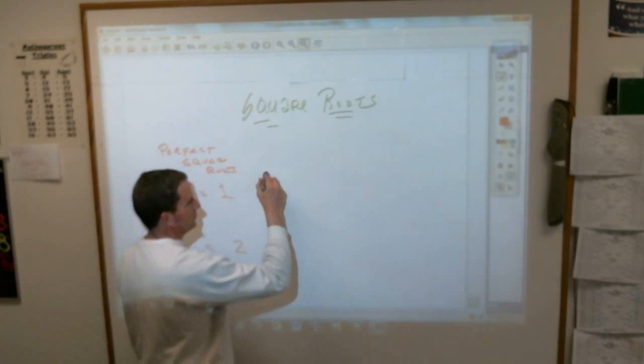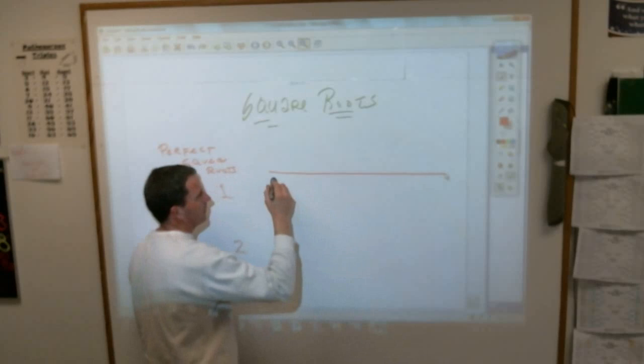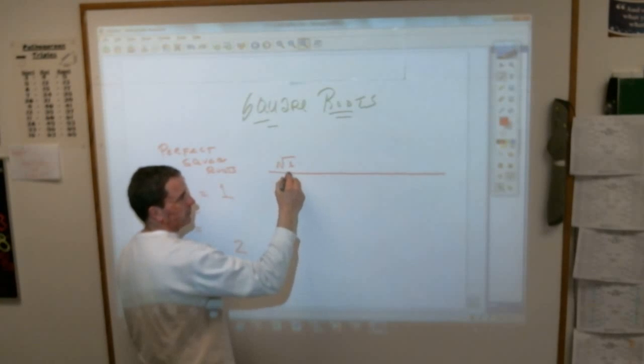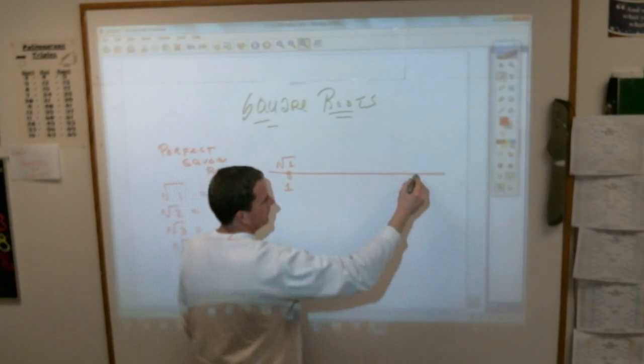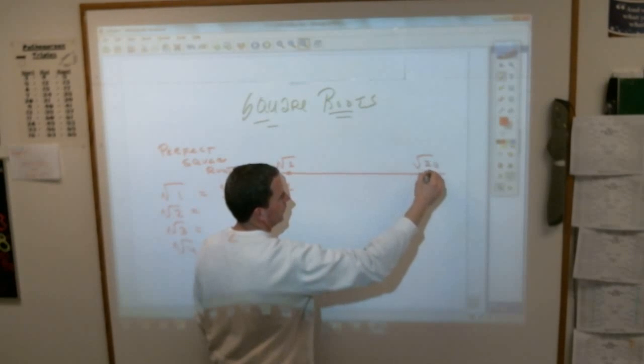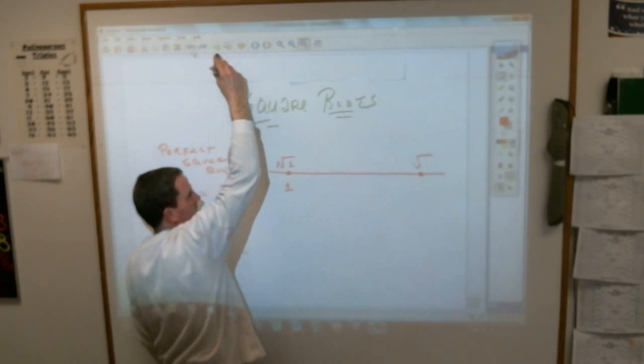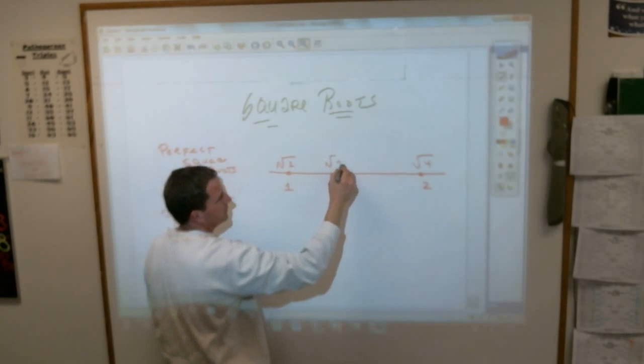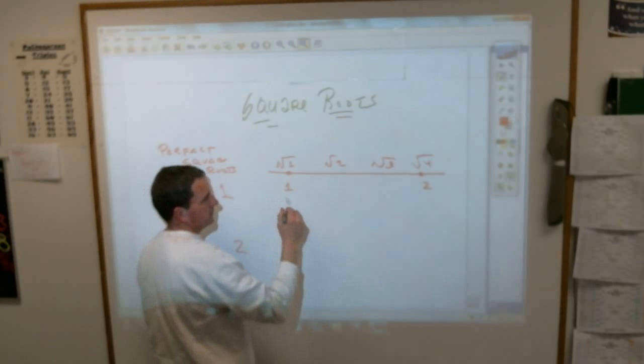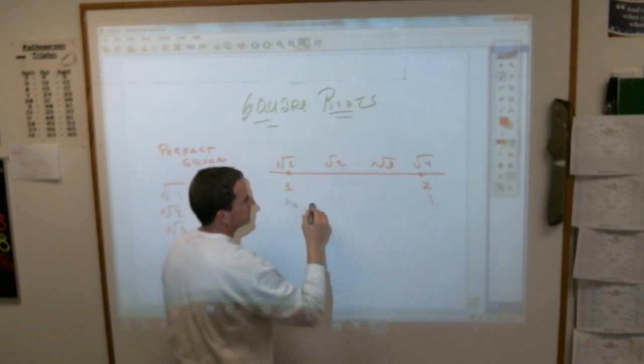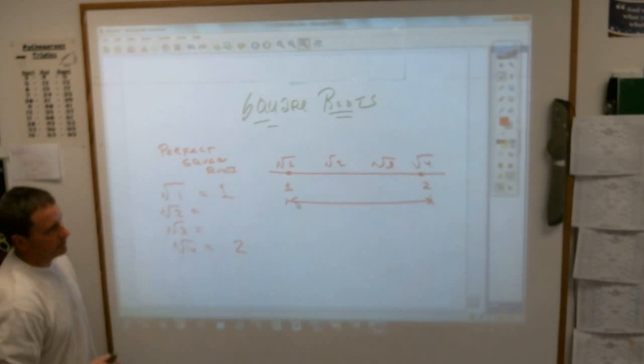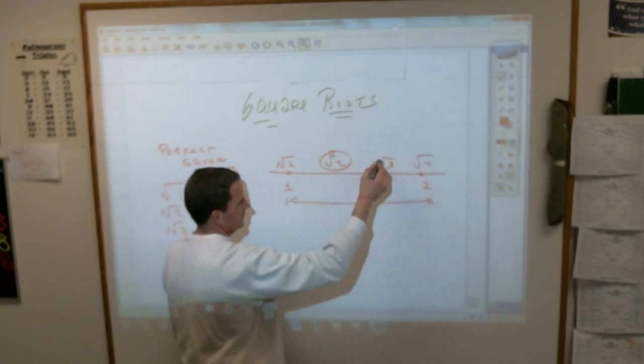To show it to you in a little different way here. If the square root of 1 is 1, here's our number line, and the square root of 4 is 2, that means the square root of 2 and the square root of 3 have to fall somewhere between 1 and 2, right? And here is the deal with these guys here.